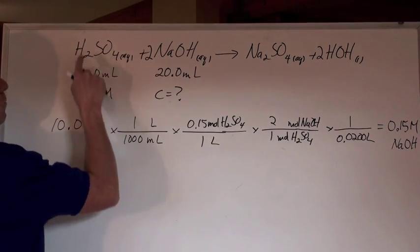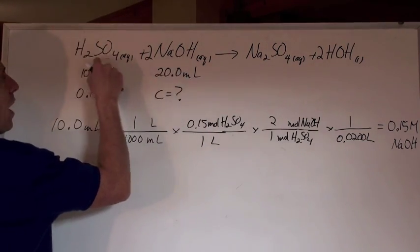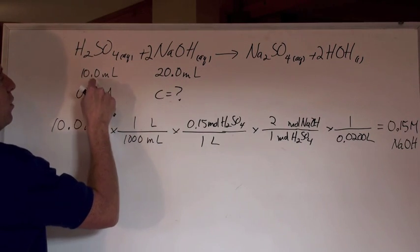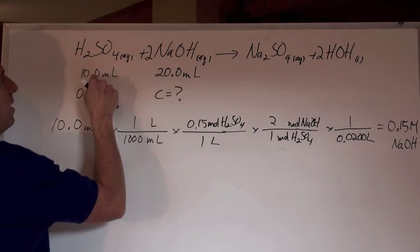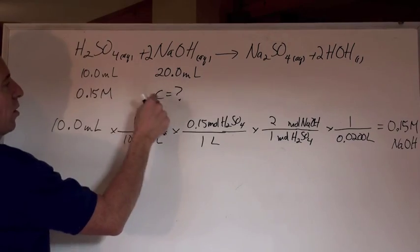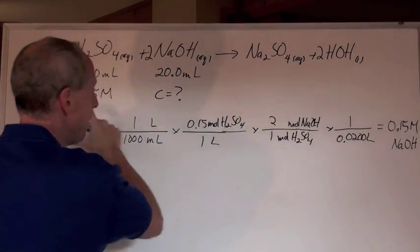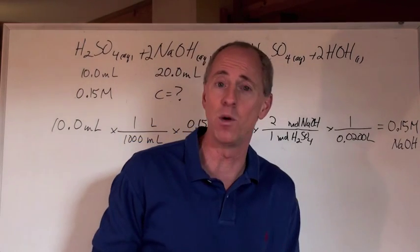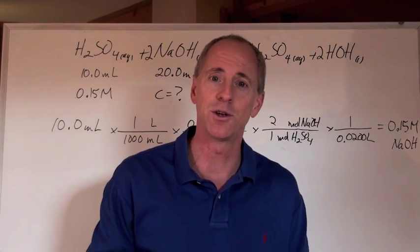Well, if you've got a one to two ratio of reaction between the acid and the base, and you've got twice as much of this base as acid, they're probably going to be the same concentrations. Is that logical to you? Well, do the math here and you're going to get 0.15 mole per liter NaOH. Solution Stoichiometry.